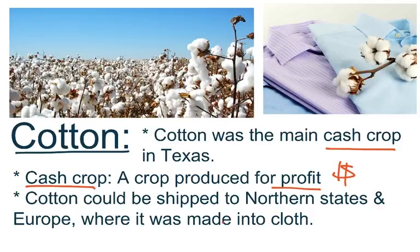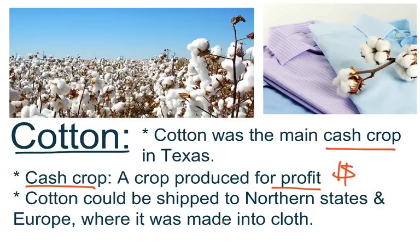Cotton was a profitable cash crop that could be shipped to northern states and Europe, where it was made into cloth. You can see how it goes from the raw cotton on the field to the clothes you are wearing, shirts, towels, bed sheets, and things of that nature.